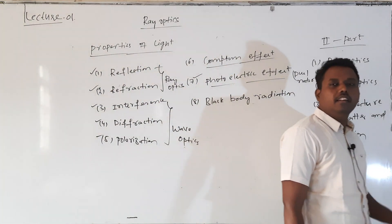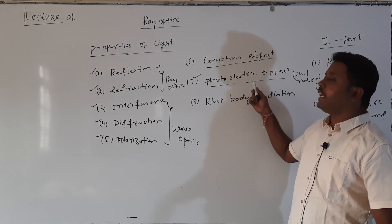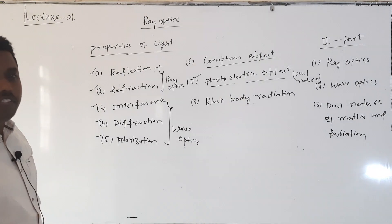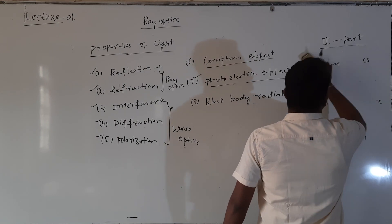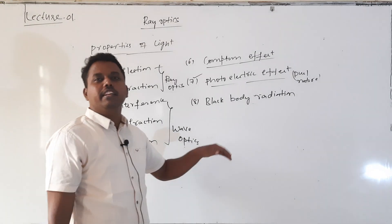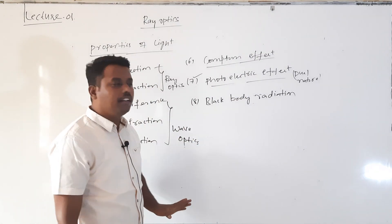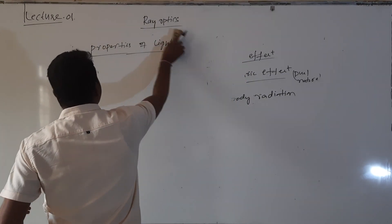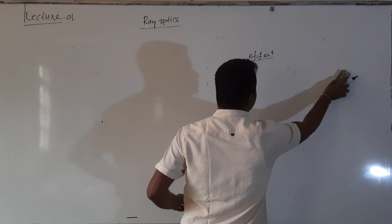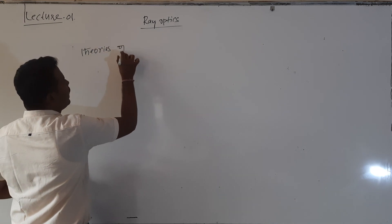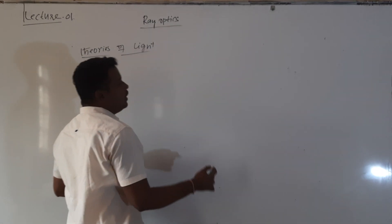These are six properties of light — also called effects of light. For explaining these properties, there are four theories of light. I will write the properties: reflection, refraction, interference, diffraction, polarization, and photoelectric effect. These are the main properties. For explaining those properties, the theories of light are given.